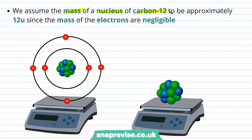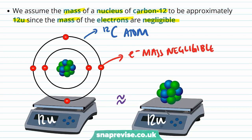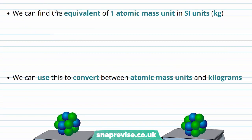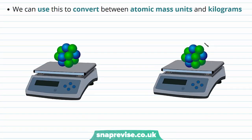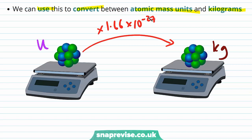We assume the mass of a nucleus of carbon-12 to be approximately 12u, since the mass of the electrons is negligible. So the mass of a carbon-12 atom is approximately equal to the mass of a carbon-12 nucleus. We can find the equivalent of one atomic mass unit in kilograms: 1u = 1.66 × 10⁻²⁷ kg. To convert from atomic mass units to kilograms, multiply by 1.66 × 10⁻²⁷; to convert from kilograms to atomic mass units, divide by 1.66 × 10⁻²⁷.